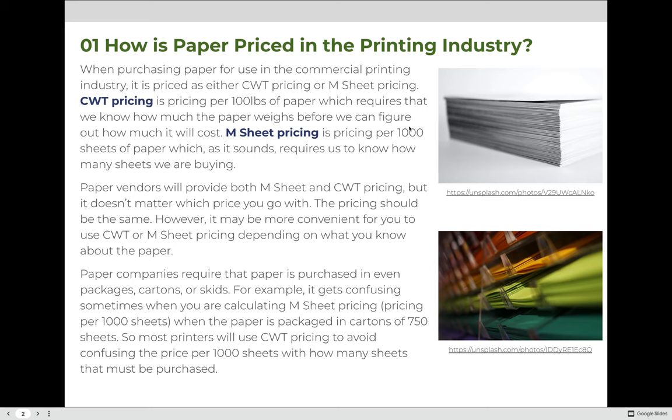Paper companies require that paper is purchased in even packages, cartons, or skids. For example, it can get confusing when you're using M-sheet pricing — which is pricing per 1,000 sheets — when the paper is packaged in cartons of 750 sheets. So most printers use hundredweight pricing to avoid confusing the price per 1,000 sheets with how many sheets must be purchased, since you must purchase in even numbers of 750-sheet cartons.